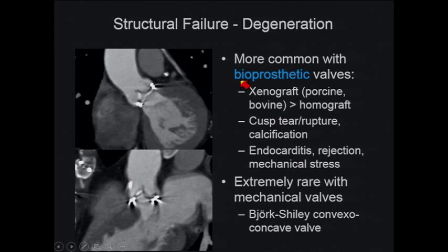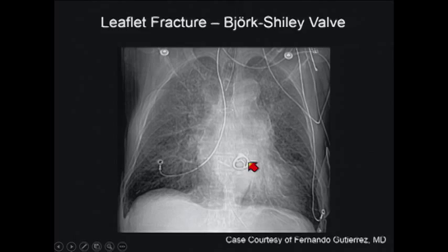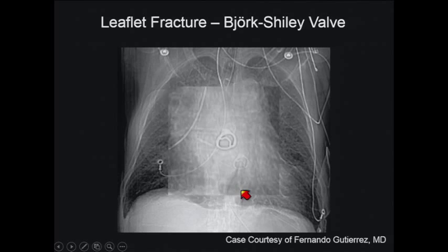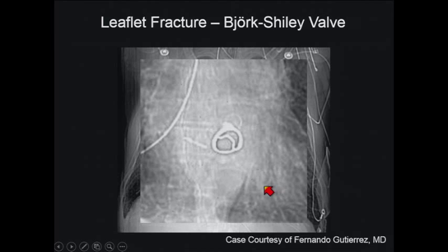Structural failure is rare with mechanical valves. The classic example is the Bjork-Shiley valve, a tilting disc valve with a strut — these struts would fracture, dislodging the disc, which can embolize. The patient presented in florid heart failure. As of 10 years ago, there were still 22,000 of these patients in the United States, so you may encounter one. But in general, it's a very low complication rate even for this valve, and with other mechanical valves this almost doesn't happen anymore.